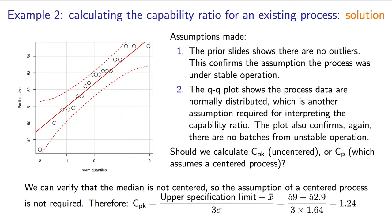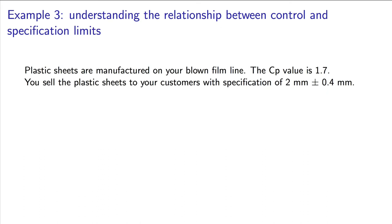Here is a final example. Plastic sheets are manufactured on your blown film line. The Cp value, in other words, the capability ratio assuming your process is centered, is given as 1.7. You sell these plastic sheets to your customers with a specification limit of 2 mm ±0.4.